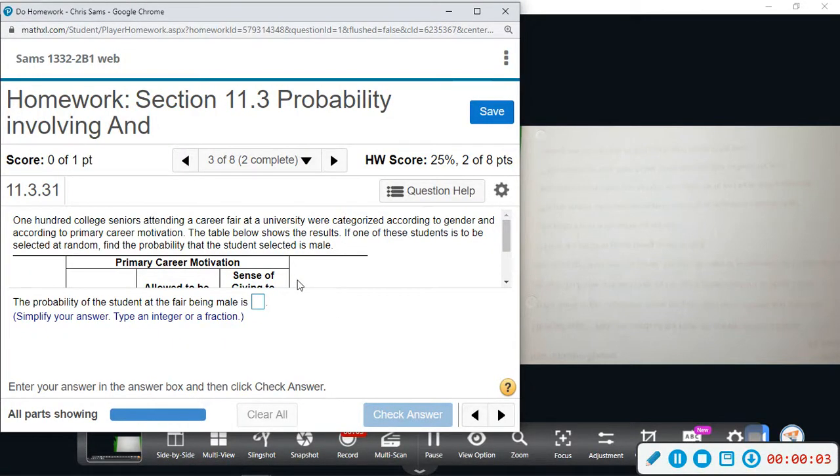Alright, number three says 100 college seniors attend a career fair at a university where they were categorized according to gender and according to primary career motivation. The table below shows us the results. If one of these students is to be selected at random, find the probability that the selected student is male.